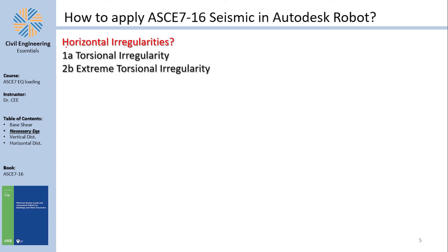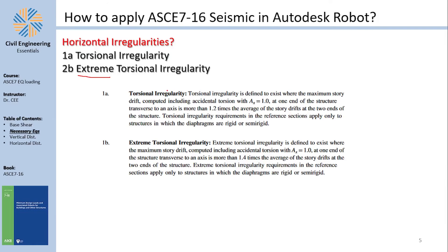Irregularities can be split into horizontal and vertical. The first horizontal irregularity is torsional irregularity, which has two parts: simple and extreme. Per the code (table 12.3.1-1), torsional irregularity exists where the maximum story drift at one end of the structure (computed including accidental torsion with ax = 1) is more than 1.2 times the average of the story drift at the two ends. For extreme torsional irregularity, the ratio is 1.4 instead of 1.2.